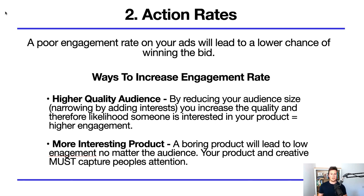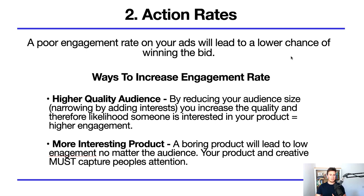Moving on to element two: action rates. A poor engagement rate will lead to a lower chance of winning the bid. Number one way to improve it is audience quality. If you target an audience of 10 million people, the chances of every single one being interested in your product is quite low, which lowers your action rate. My advice: reduce your audience size, use the narrow button, add more interests, and get it below a million — closer to half a million is even better. The stronger the interest someone has in your niche, the more likely they are to engage.